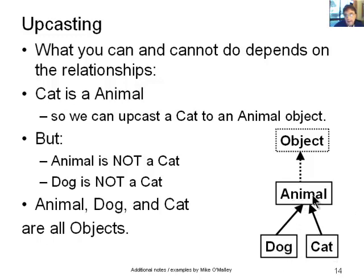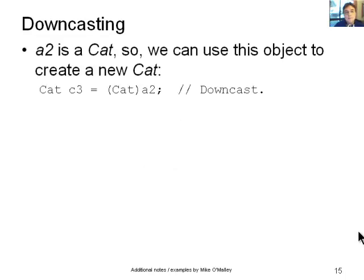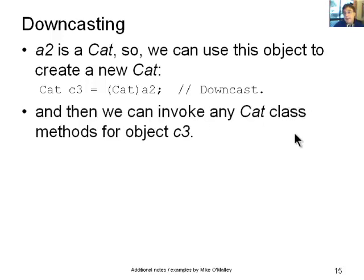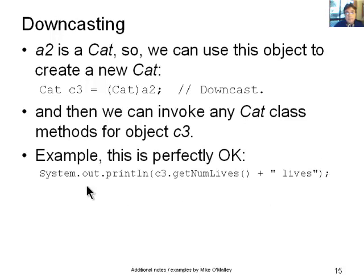Dog is an animal. Cat is an animal. But animal is not a dog, and animal is not a cat. So you can go up, but you can't go down. So what is downcasting? A2 is a cat. So we can use this object to create a new cat. For example, Cat C3 equals (Cat) A2. And that's a downcast because we're effectively reverting the cat that's referred to by the A2 object back to being a proper cat. That's not just labelled as a cat. It becomes a proper cat again. And then we can invoke cat class methods for the object C3, which is our new cat. And system out print line C3.getNumberOfLives. That's perfectly okay. Java's happy now because it is really a cat object we're dealing with. So that's downcasting.